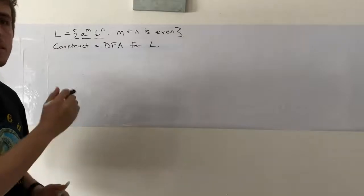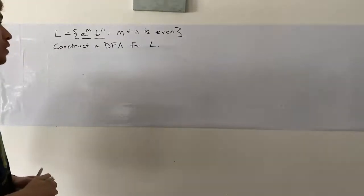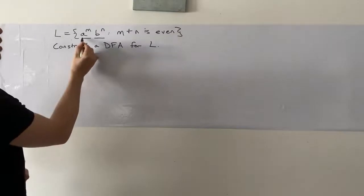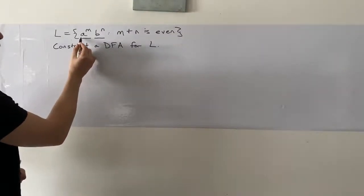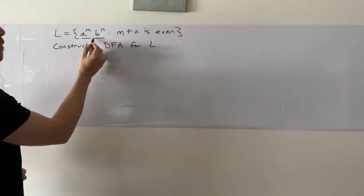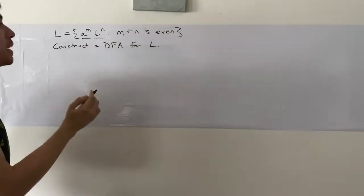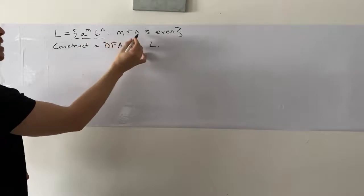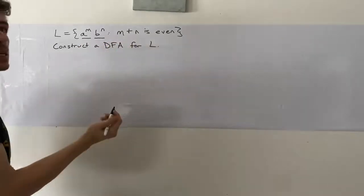Hi, so we're going to look at this problem today, which is constructing a DFA for the language of strings that have a certain number of A's, followed by a certain number of B's, where the number of A's plus the number of B's is even.